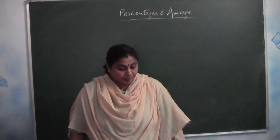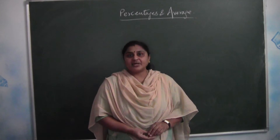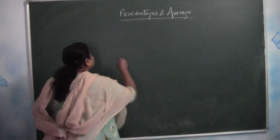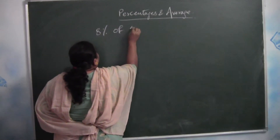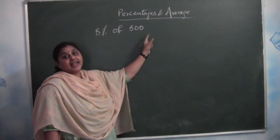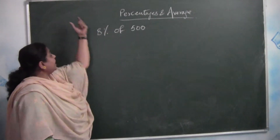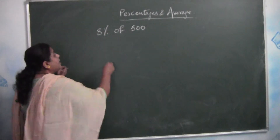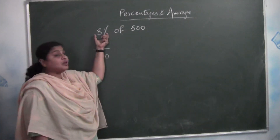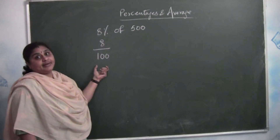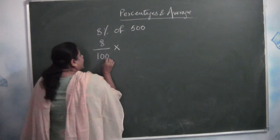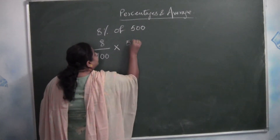Now let me start. Exercise 2.5: find the value of the following percentages. We have to find the value of 8 percent of 500. Now, 8 percent — how do we write 8 percent? 8 by 100. Of means multiplication. So it is 8 by 100 into 500.